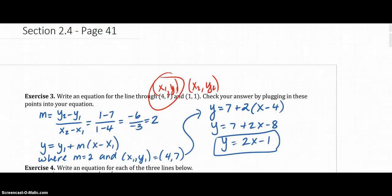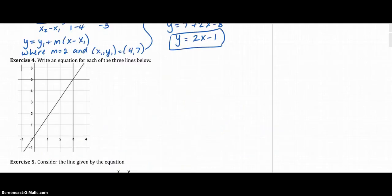Okay, exercise 4. Write an equation for each of the lines below. So there's 3 lines here. This is the x-axis, this is the y-axis, and there's 3 lines. One going through (0, 0), one horizontal line going through 5, and one vertical line going through 3. Go ahead and pause and try this one.